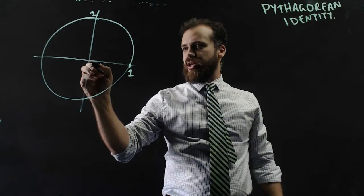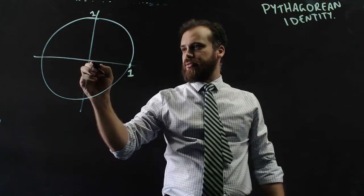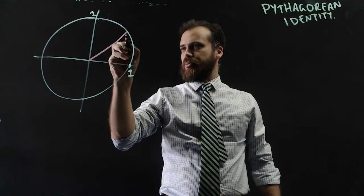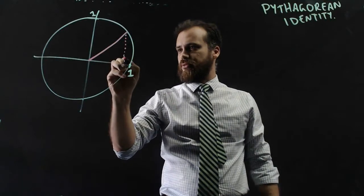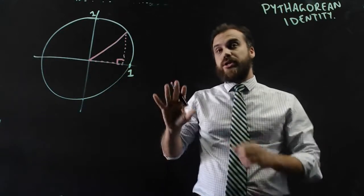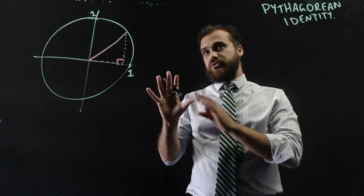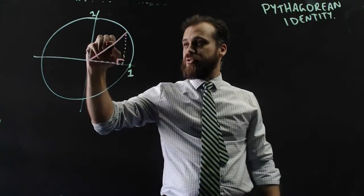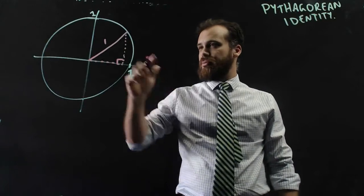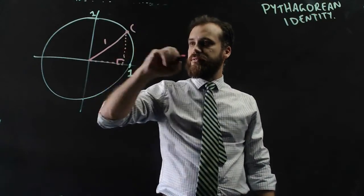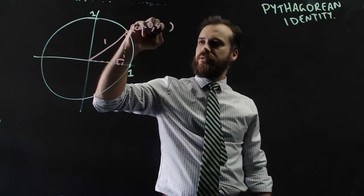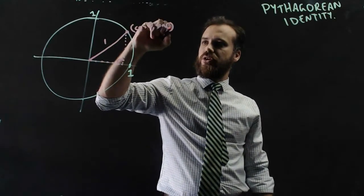If I draw a line anywhere along here and drop a right-angled triangle here, we know that the right-angled triangle has a hypotenuse of 1. And we should remember that the point here is the value cos theta, sin theta.